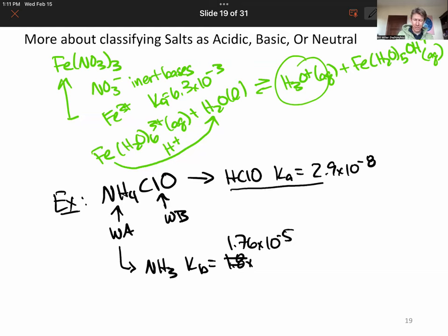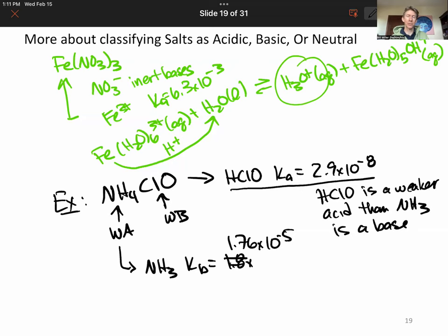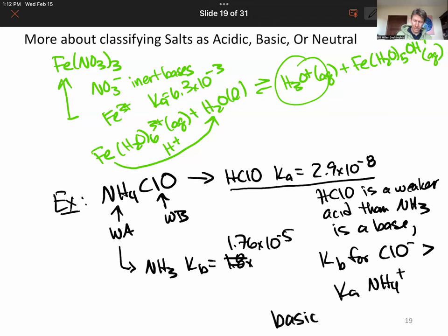What we're going to see from this is that even without doing the numbers, we can see if Ka for HClO—so HClO is a weaker acid than ammonia is a base, because Kb is bigger for ammonia. That means that Kb for the hypochlorite ion will be greater than Ka for ammonia, and this will lead to a basic solution.